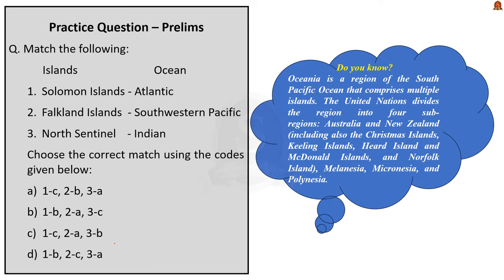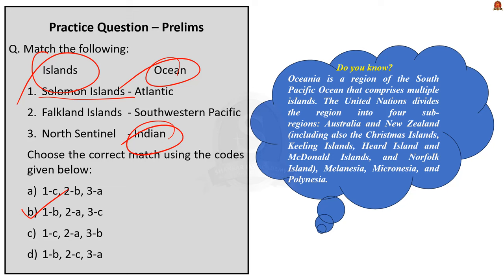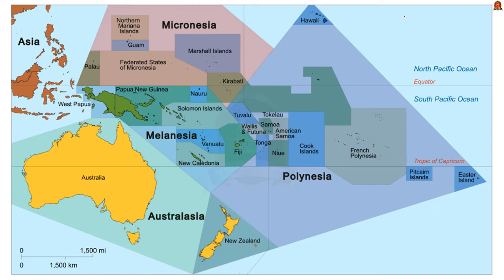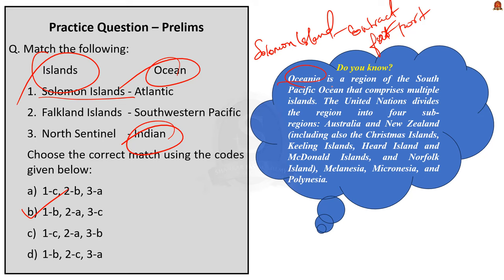The next question asks you to correctly match islands to their oceans; the correct answer is Option B. Solomon Islands is in the southwestern Pacific, the Falkland Island is in the Atlantic, and North Sentinel is located in the Indian Ocean. This question was asked on the backdrop of a state-backed Chinese company winning a contract to develop a key port in the Solomon Islands. Solomon Islands is a part of Melanesia — a sub-region of Oceania in the southwestern Pacific Ocean, consisting of six major islands and over 900 small islands, located approximately 2,000 kilometers northwest of Australia.